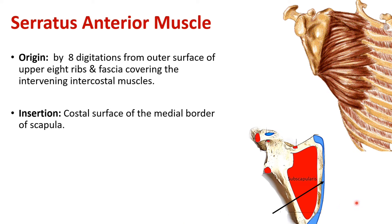The insertion of the serratus anterior is along the medial border of the scapula on its costal surface. Here we can see the costal surface of the scapula and the serratus anterior — this blue colored attachment on the costal surface of the medial border of the scapula. Now, how exactly are these 8 digitations inserted along the medial border?